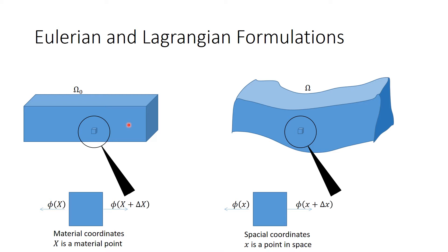In solid mechanics, we are always concerned with two configurations. A reference configuration, whose coordinates are fixed, and a deformed configuration that moves in space with time. Different physical quantities can be written in terms of the spatial coordinates, small x's, or the material coordinates, capital X's.